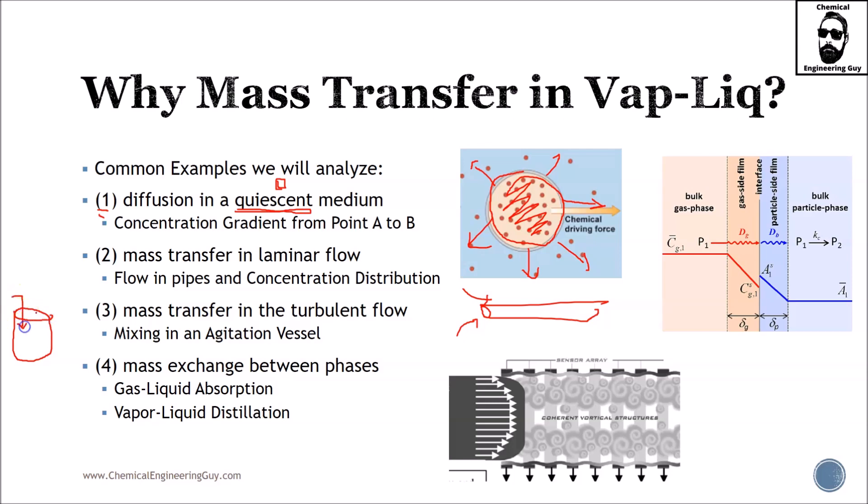You want to mix them, so you need to favor mass transfer in the tank. What do you do? You add an agitation system. Number four: mass exchange between phases, which is the main scope of this course - gas-liquid absorption or vapor-liquid distillation.